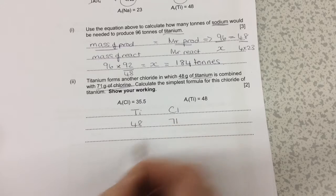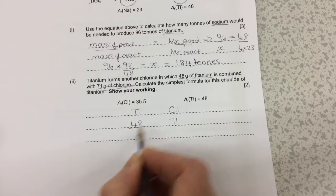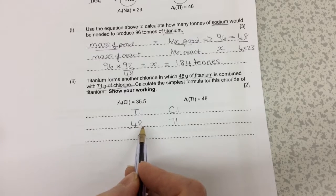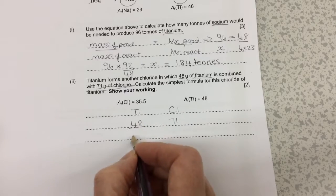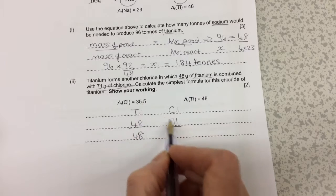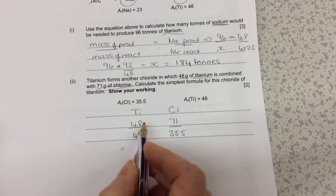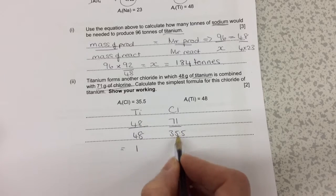The next step in this calculation is to divide by the AR for each element. For titanium, I'm going to divide by 48, and for chlorine I'm going to divide by 35.5. When you calculate that on the calculator, 48 divided by 48 is 1, and 71 divided by 35.5 is 2.